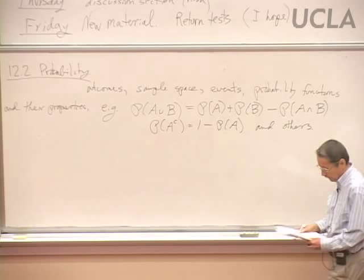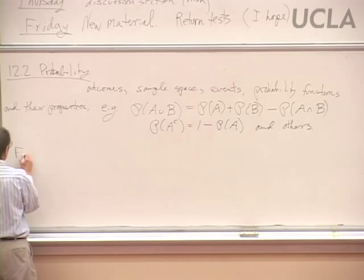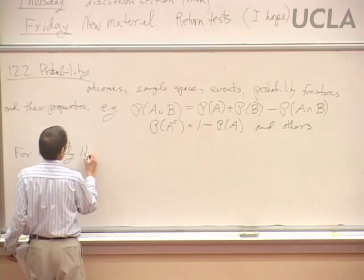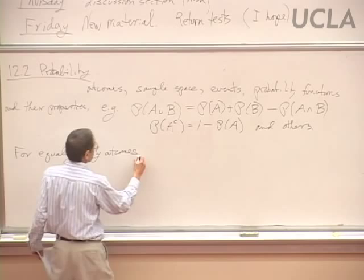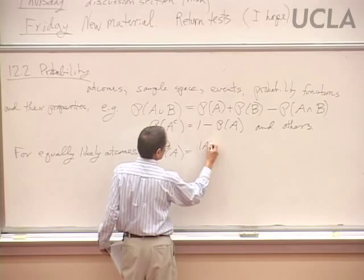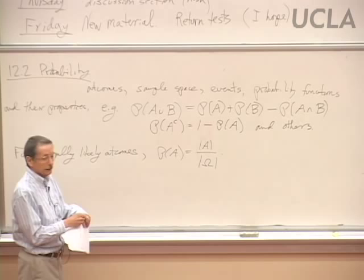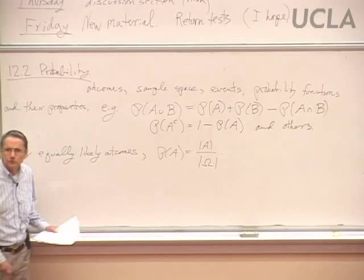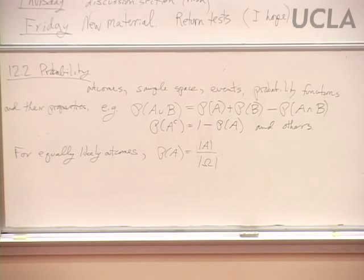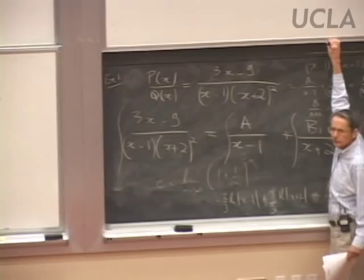To find the probability of at least one success, we look at the probability of zero successes and subtract from one. This is not a complete list. In some cases we had equally likely outcomes, so that the probability problems reduced to counting problems — and we know about counting from the previous section.